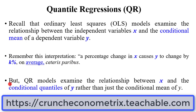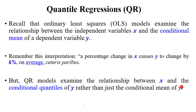On the other hand, QR models — which are quantile regressions — examine the relationship between X, that is the regressors, and the conditional quantiles of Y, rather than just the conditional mean of Y.